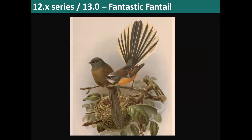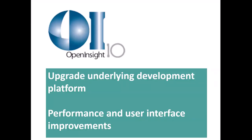The next major release will be version 13, codenamed Fantastic Fantail. The biggest change is upgrading the underlying database platform. We currently use Open Insight version 9, which will be reaching end of life next year, so it's critical that we upgrade to Open Insight version 10 to continue getting security enhancements and patches for that underlying database and user interface product. Matthew and our team have already been working on that migration this year, and that will be the first focus for next year's major release. Once we've completed the migration, we can look at more general enhancements to the interface and functionality of Vernon.